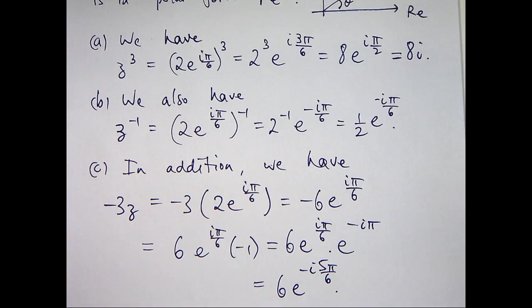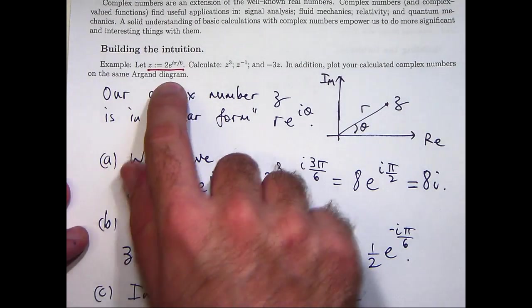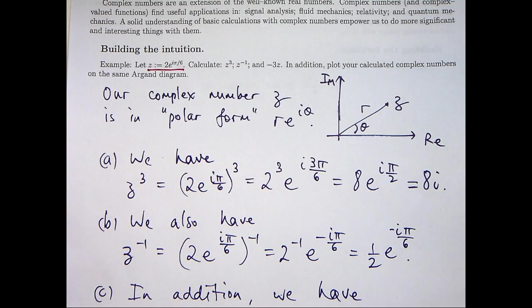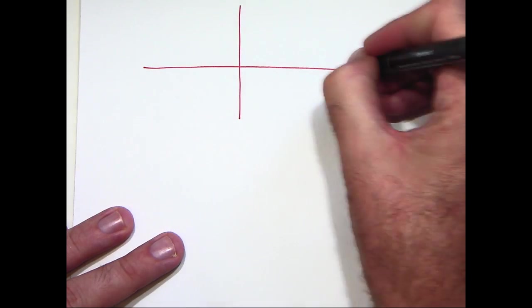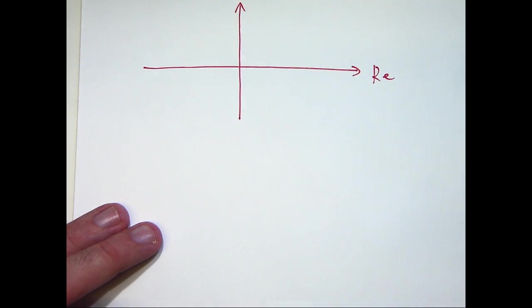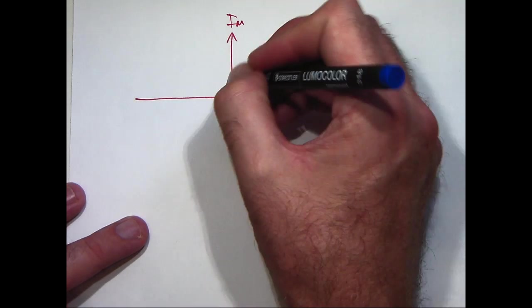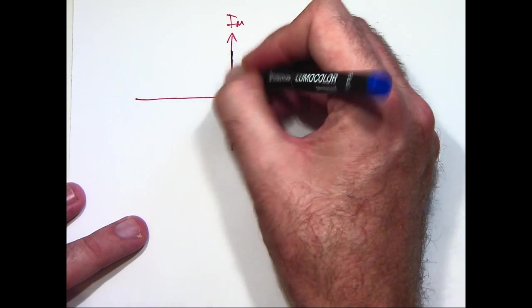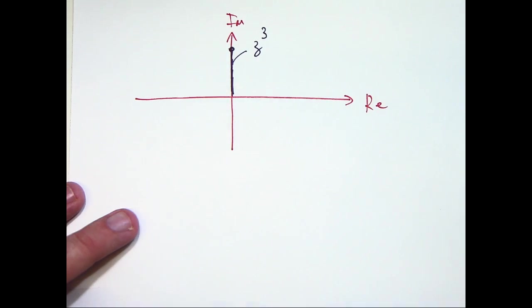So, let's put all that information together and answer the second part of the question: plot your calculated complex numbers on the same Argand diagram. So firstly, we want to plot 8i on there. It's going to be along the positive imaginary axis. This is actually z³.